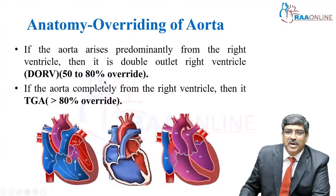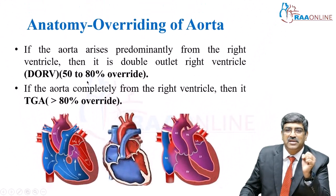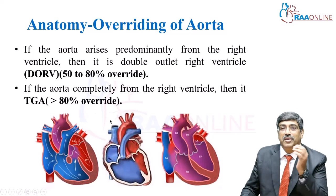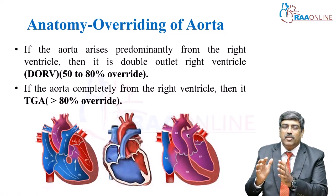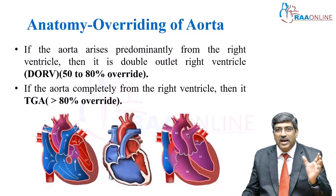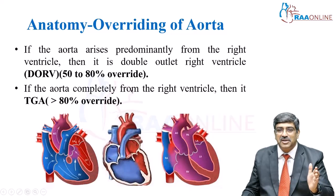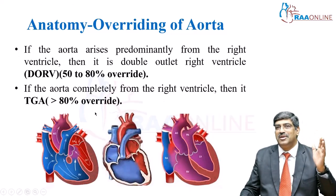If the override is around 50 to 80 percent, here you can see the right ventricle — both the aorta and the pulmonary artery receive blood from the right ventricle. This is called double outlet right ventricle, where override is about 50 to 80 percent. When the override is greater than 80 percent, that is transposition of the great arteries — the right ventricle gives rise to the aorta and the left ventricle gives rise to the pulmonary artery. So it is a spectrum: if override is 10 to 50 percent, it is Tetralogy of Fallot; 50 to 80 percent is double outlet right ventricle; and greater than 80 percent is transposition of the great arteries.